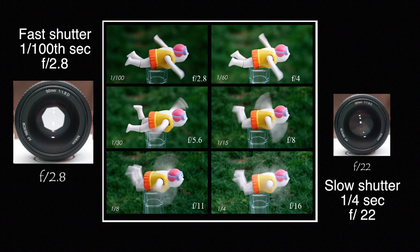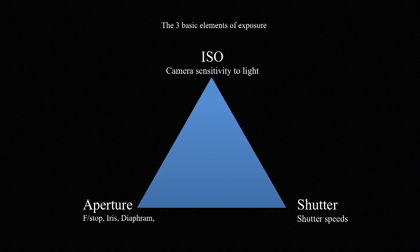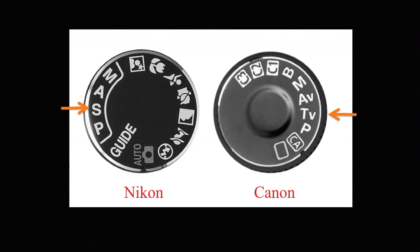The larger aperture of 2.8 in the upper left makes the background out of focus. This effect from larger and smaller apertures is called depth of field — it's a subject for another time. Nobody new to photography can possibly understand the effects of shutter, aperture, and ISO in one lecture. Let's just concentrate on shutter for now.